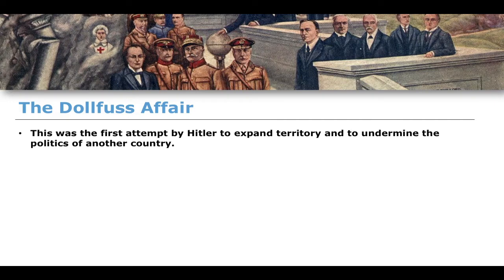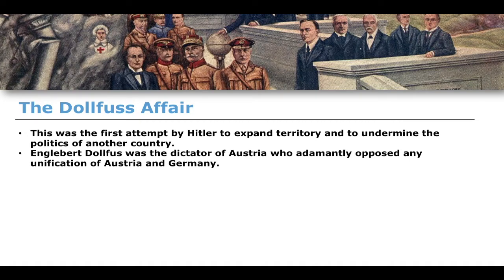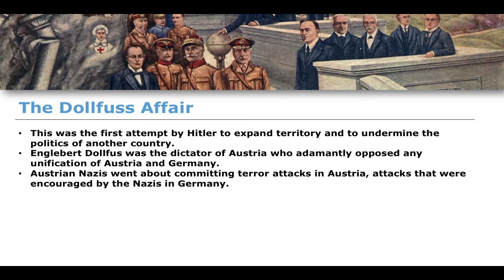I'll begin with the Dollfuss Affair, which was the first attempt by Hitler to expand territory and undermine the political settlement of another state. Engelbert Dollfuss was the dictator of Austria and was adamantly opposed to any unification of Austria and Germany. To get around this, Austrian Nazis committed a number of terror attacks in Austria — attacks that were encouraged and substantially funded by the Nazi party — with the aim of destabilizing the Austrian system.